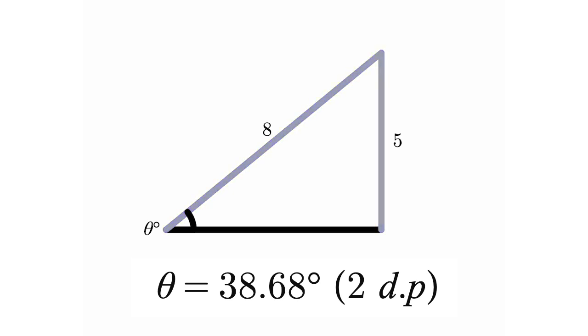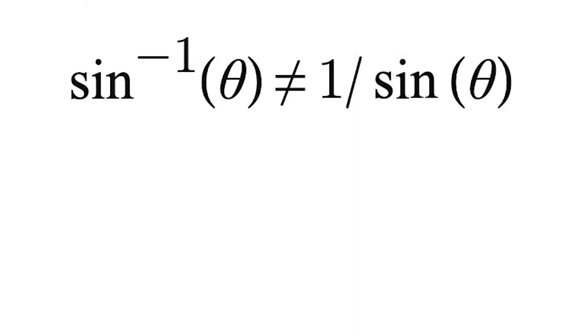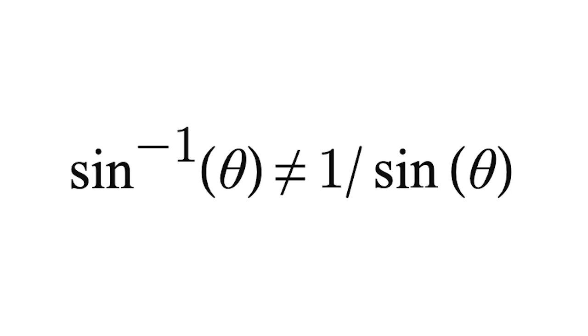Now, it's perfectly normal that we don't get a neat value for our degrees. It happens more often than not in trigonometry. Please note that inverse sine is not the same as 1 over sine. It is simply a way of representing the inverse function, not the reciprocal.